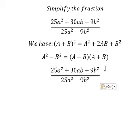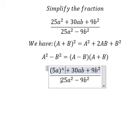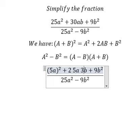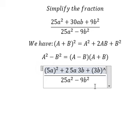So this one, that is about 5a everything to the power of 2. Then that is about number 2 multiplied by 5a and 3b. This one that is about 3b everything to the power of 2.